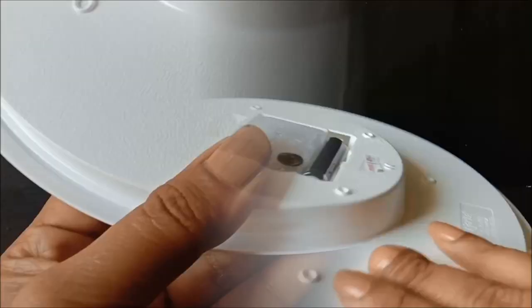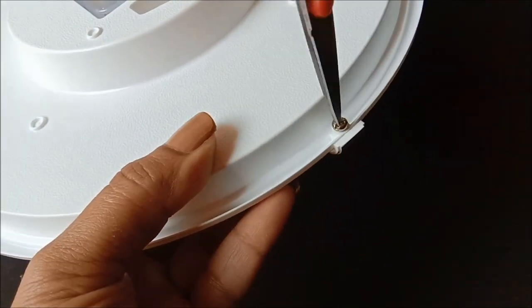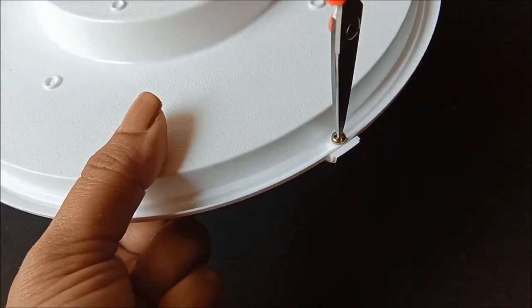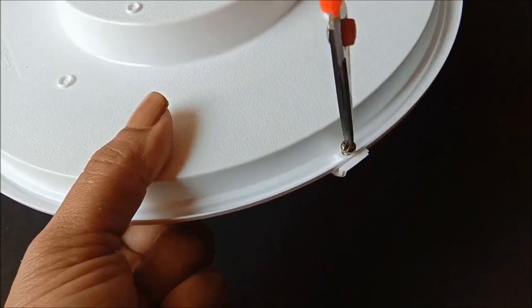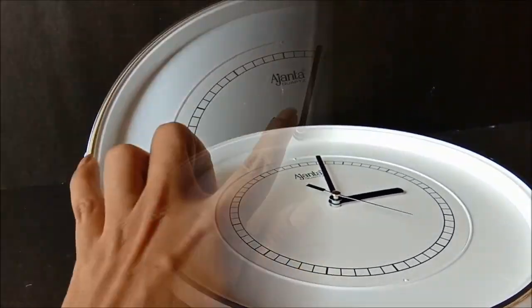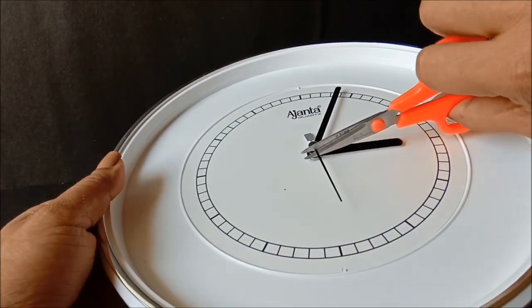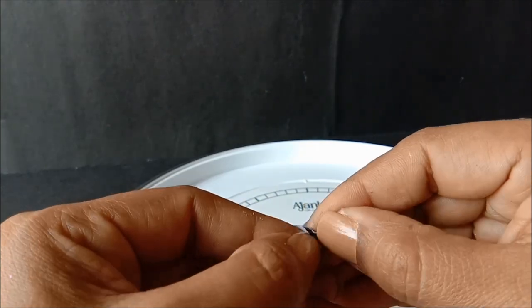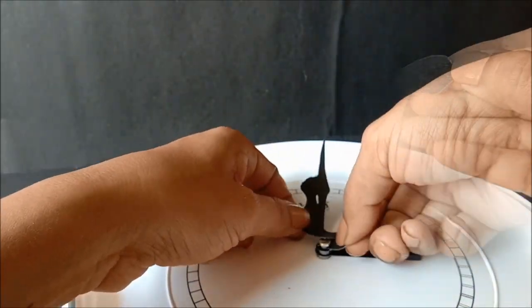Now unscrew the clock to fix our elegant dancer inside. As we don't need this second hand, just cut it off and then stick the body this way.